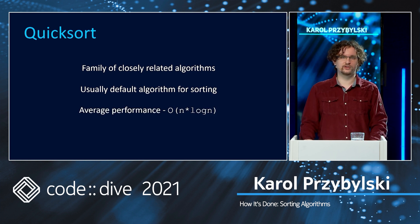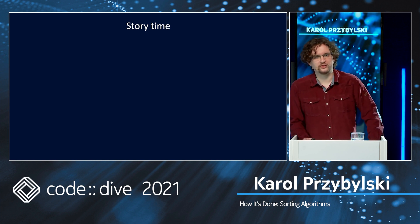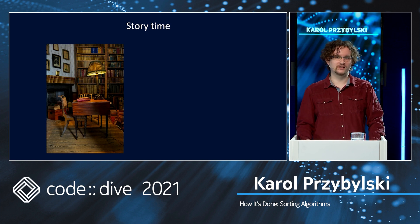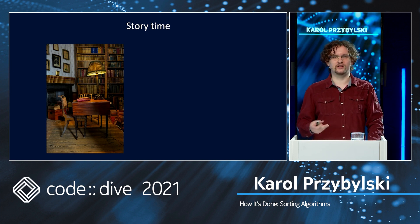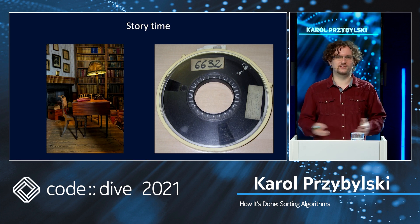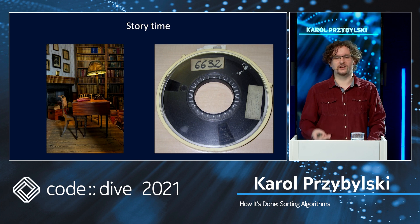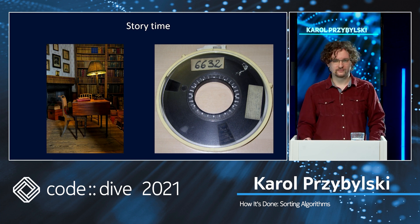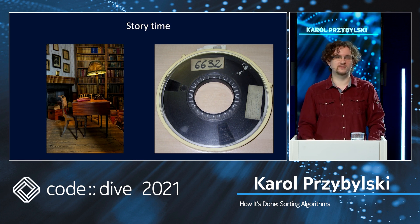Now for a little story time, because I think it's quite interesting how Quicksort was conceived. The year is 1959, and imagine a dark room where a young British student is sitting in his dorm at the University of Moscow. He wants to learn the Russian language, and in order to do that he has to translate words from Russian sentences using a dictionary on magnetic tape. In order to scan the translations in one go, he has to sort the words from the sentence in alphabetical order and do it quickly enough. And so this way he came up with the idea of Quicksort. He had a real-life problem, he had a set of requirements, and he decided to solve it with an algorithm.